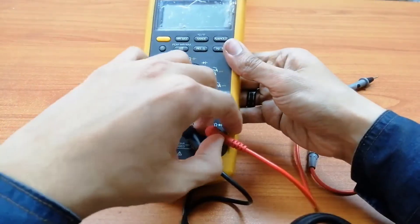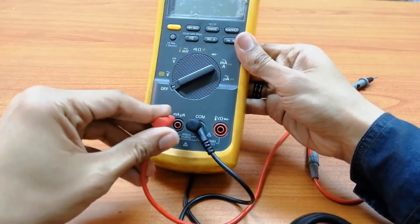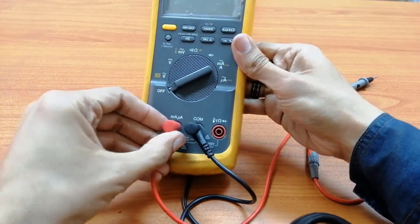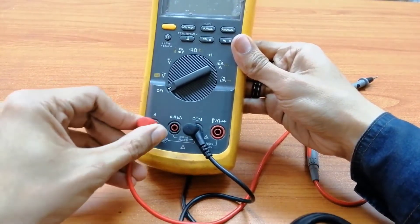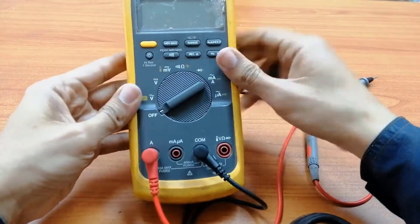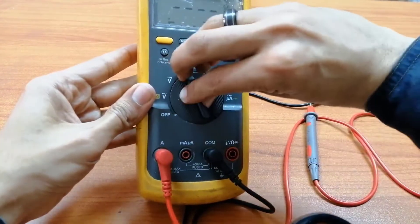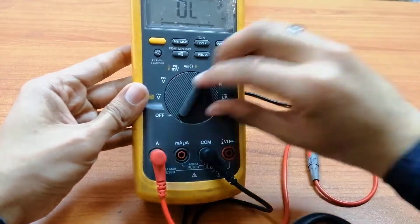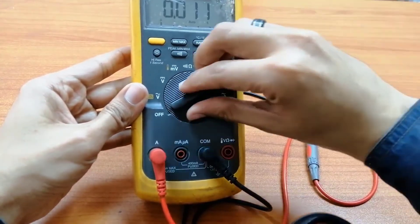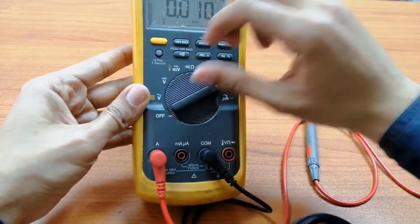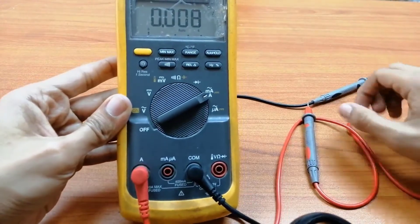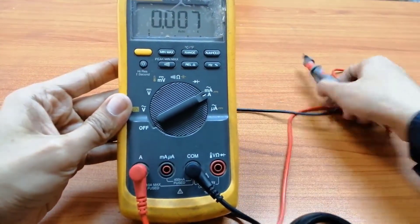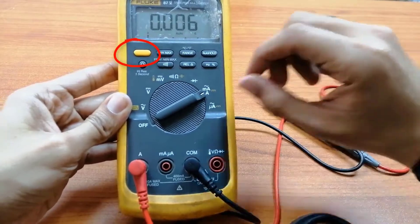But if we want to measure current, we should connect the red wire in amps or milliamps terminal and change the selector to the amps position. Here we could measure current, and here we could measure AC or DC current, and we could change from DC to AC by pressing this button.